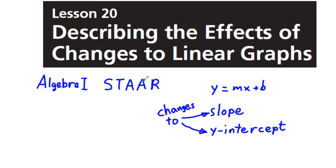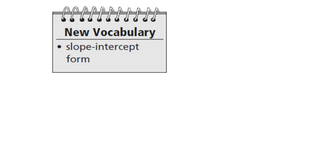This is the Algebra 1 STAAR — State of Texas Assessment of Academic Readiness — lesson 20: describing the effects of changes to linear graphs. Here we have the standard slope-intercept form equation y equals mx plus b. In this lesson we're going to look at changes to m, the slope, and changes to b, the y-intercept. The slope-intercept formula is y equals mx plus b, where m is the slope and b is the y-intercept.